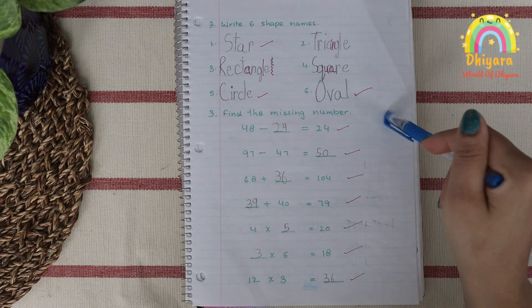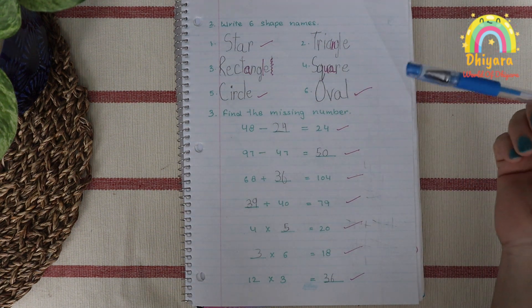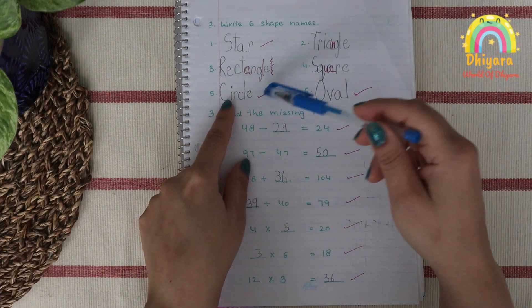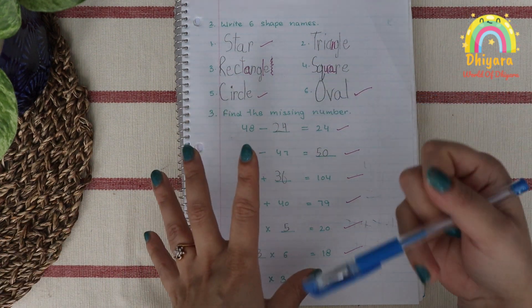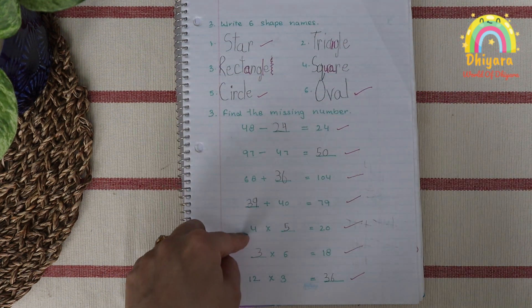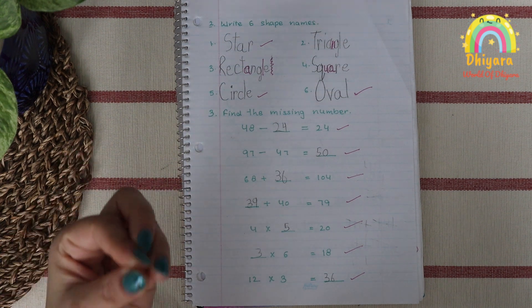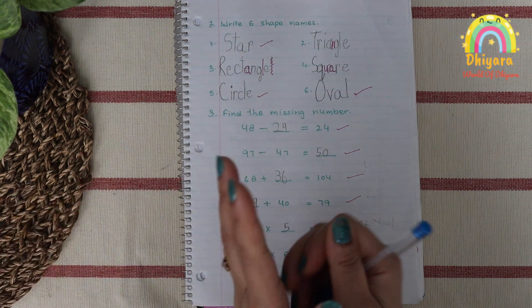Next we have write six shape names. Now we are practicing the basic shape spellings, but you can see that she has made a mistake. She has forgotten, so I have given some shape names for revision. Again here I have made some equations and there was one number missing, so she has to find the number.